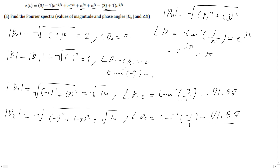Simply, for the magnitude, we just take the square root of the squared real number added to the squared imaginary number. And for the phase, we take the inverse tangent of j over r, which is the imaginary number over the real number. Thank you for watching, and hopefully I'll see you soon. Thank you.